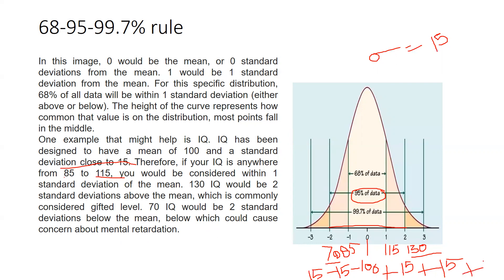For three standard deviations, we add 15 again to get 145 on the upper side. On the lower side, subtracting 15 from 70 gives us 55. So three standard deviations covers 99.7% of the data, which falls between 55 and 145.